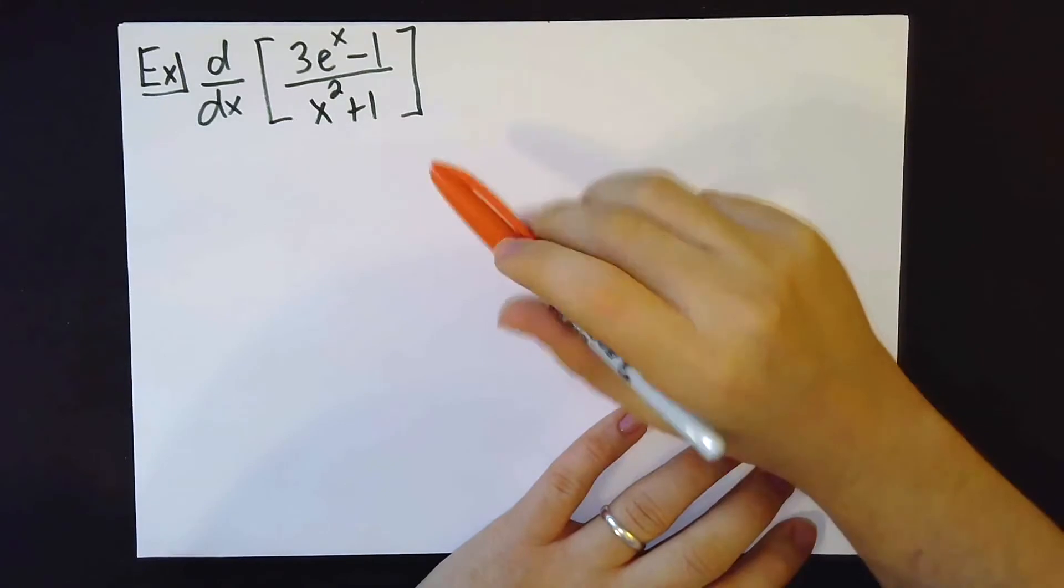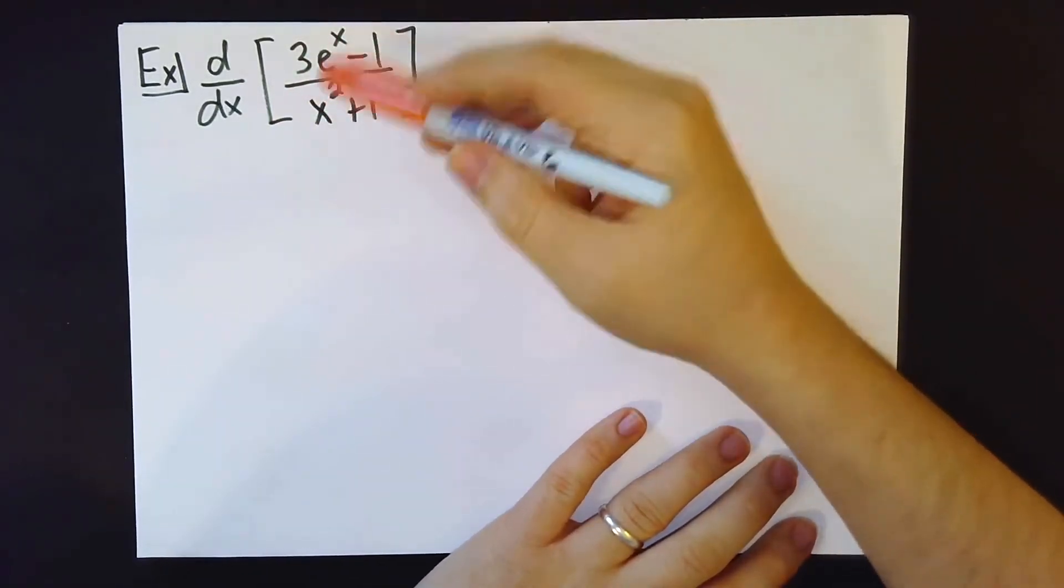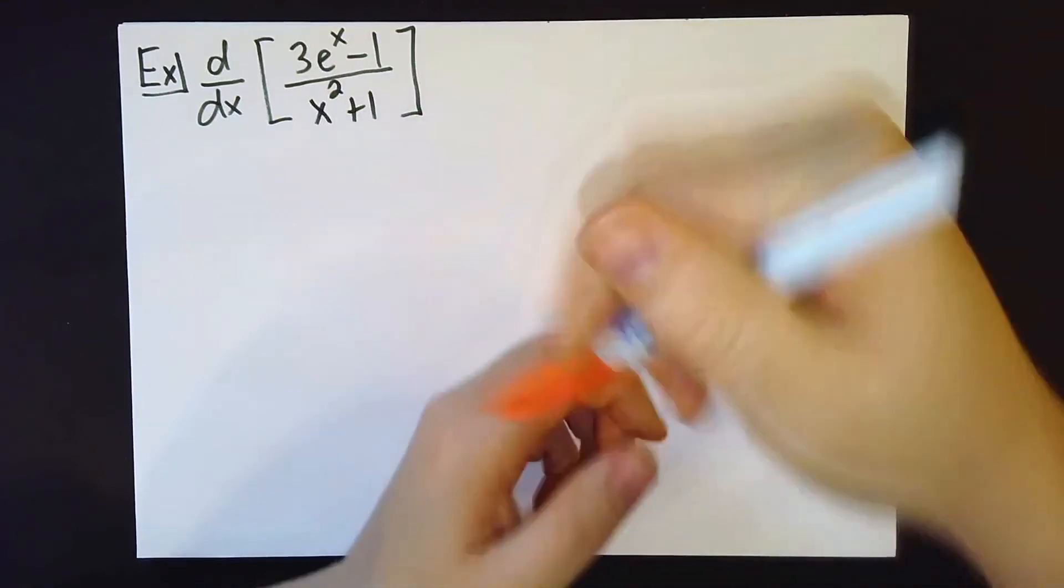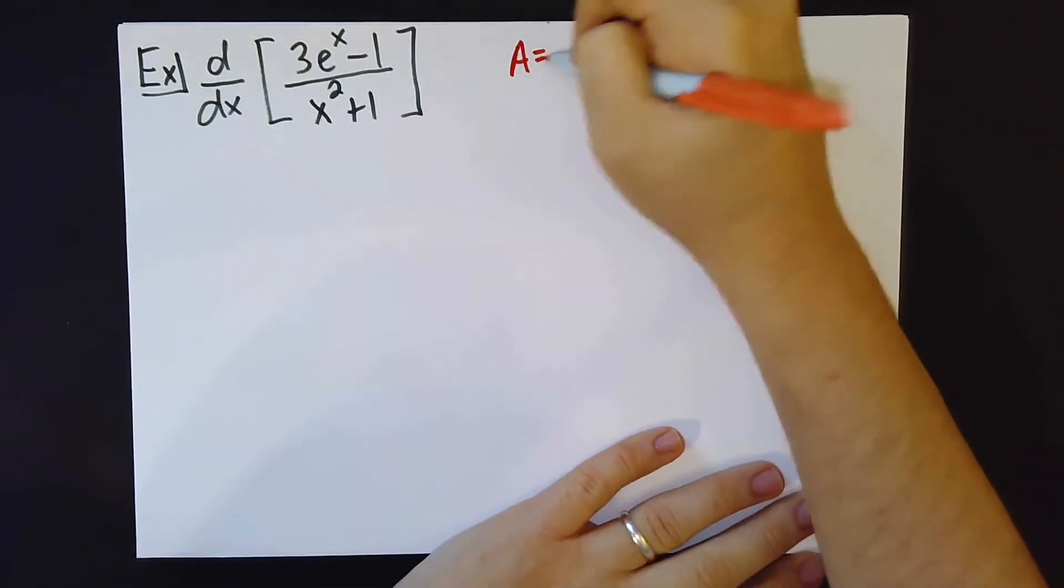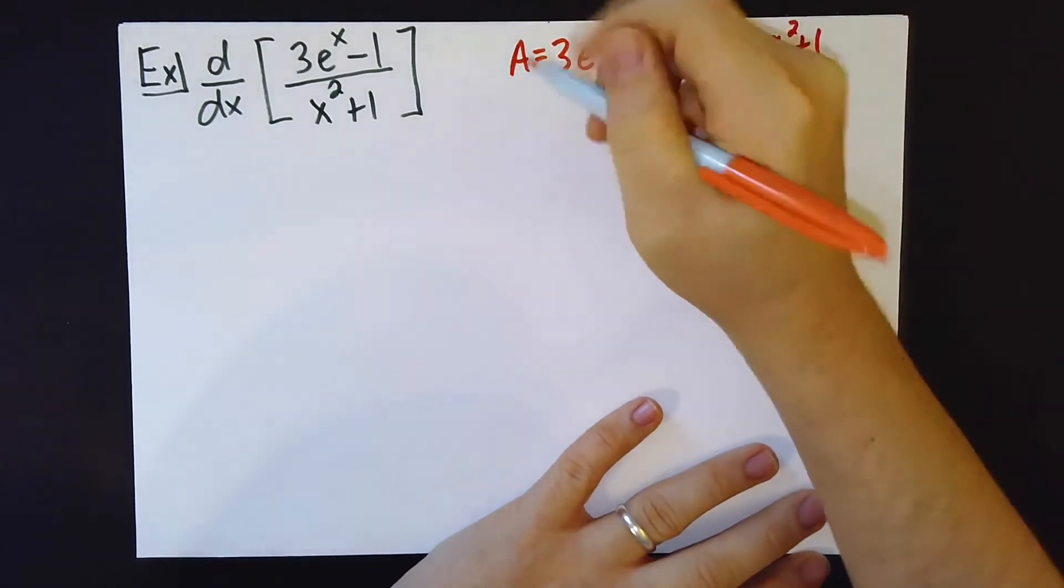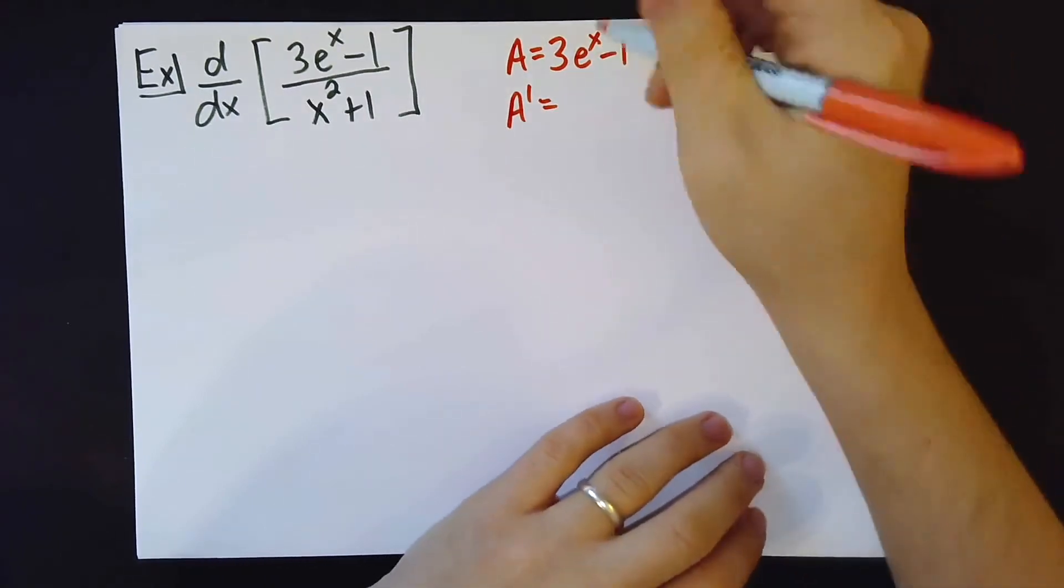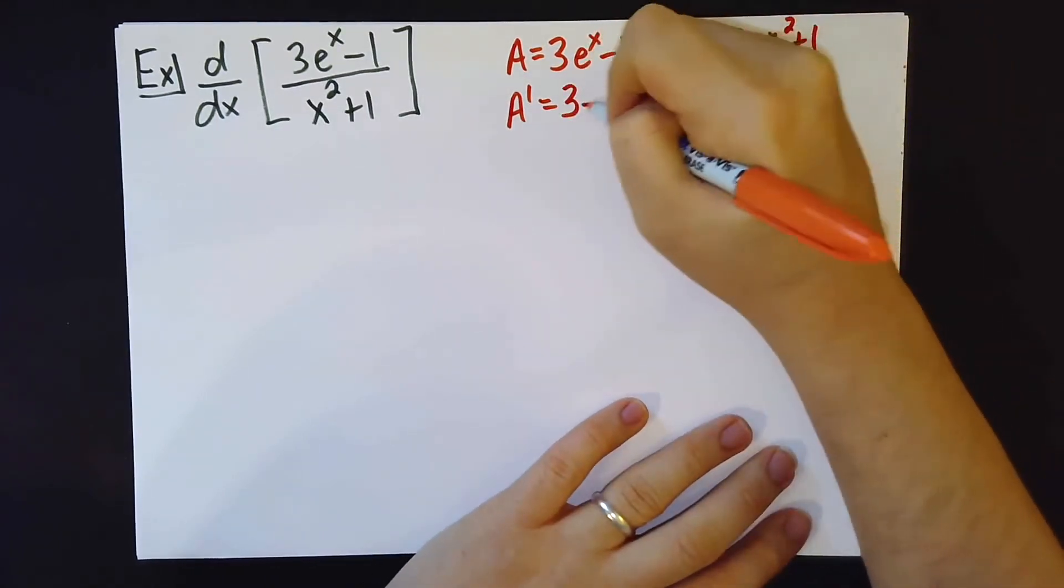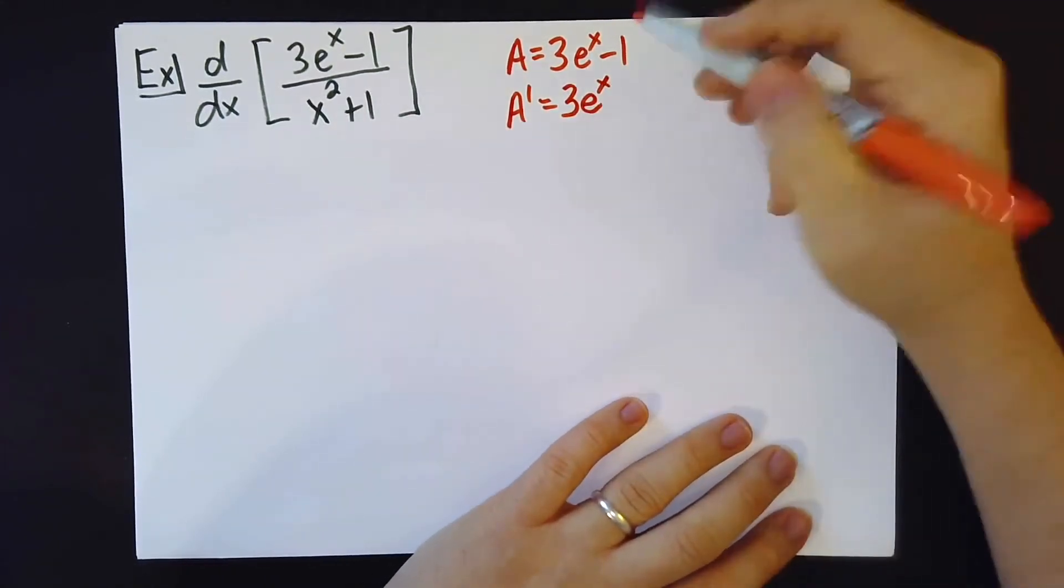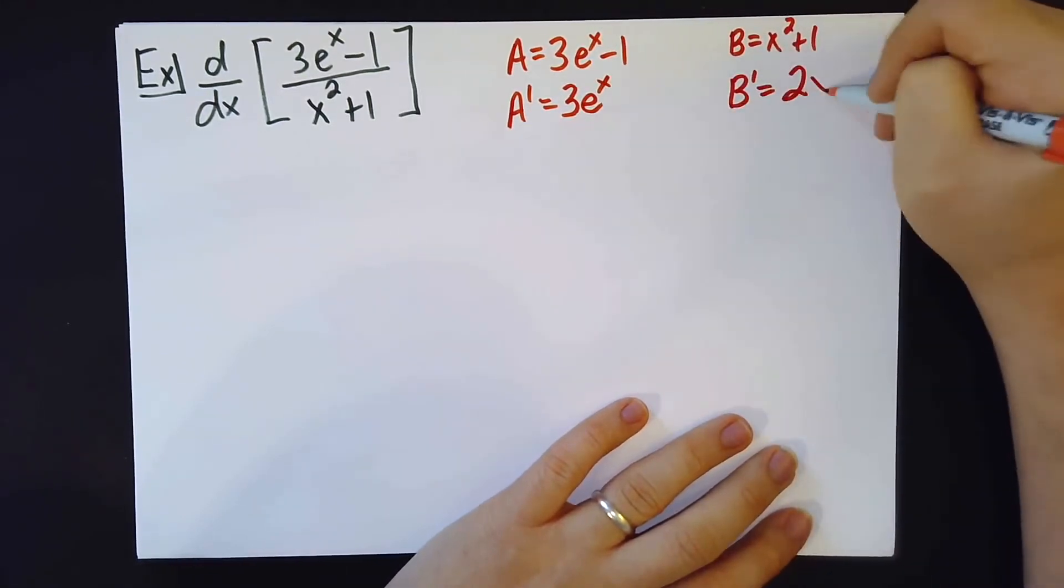Next up, let's start doing some examples where I mix in some of our other functions like e to the x and natural log. Remember the derivative of e to the x is e to the x, so I will get just 3e to the x here. The derivative of minus 1 is 0, and here I'll get 2x.